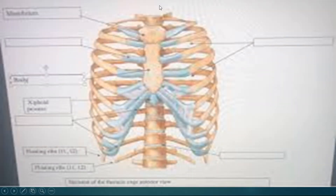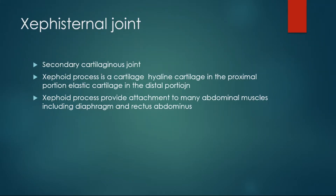The xiphisternal joint is between the xiphoid process of the sternum and the body of the sternum. It is a secondary cartilaginous joint. Secondary cartilaginous joints are also called symphyses. They are found mostly in the midline of the body and they offer some movement.